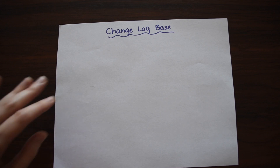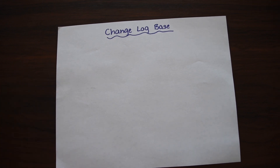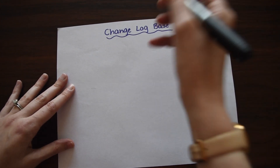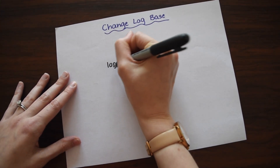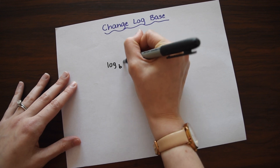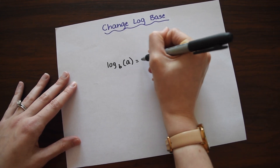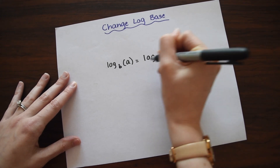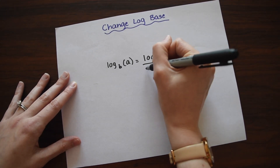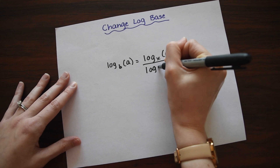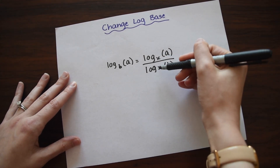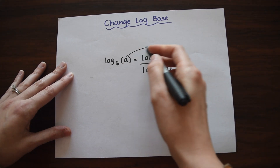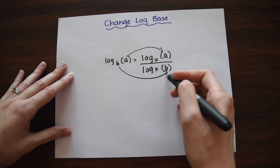Let's look at our rule. It's called the base switch rule because we're switching bases, and it's log base b of a equals log base x of a, all over log base x of b. The x's are just any base that you're trying to convert it to, and notice we move the a over here and the b down here.